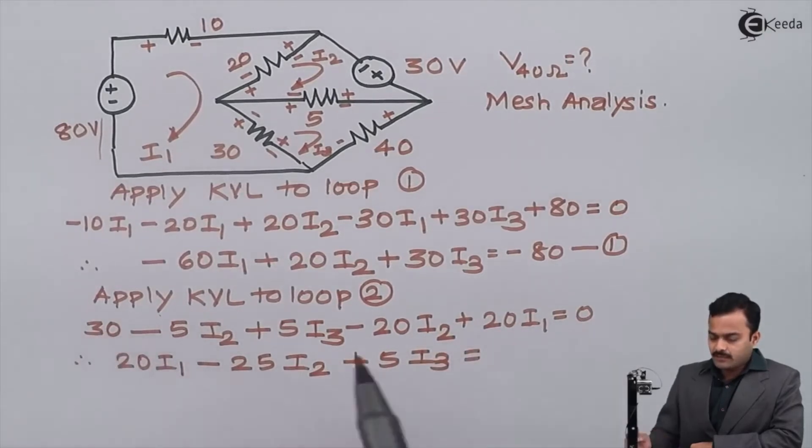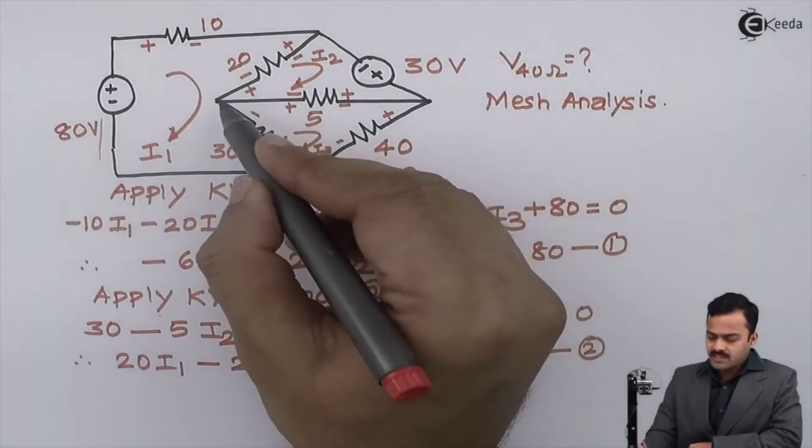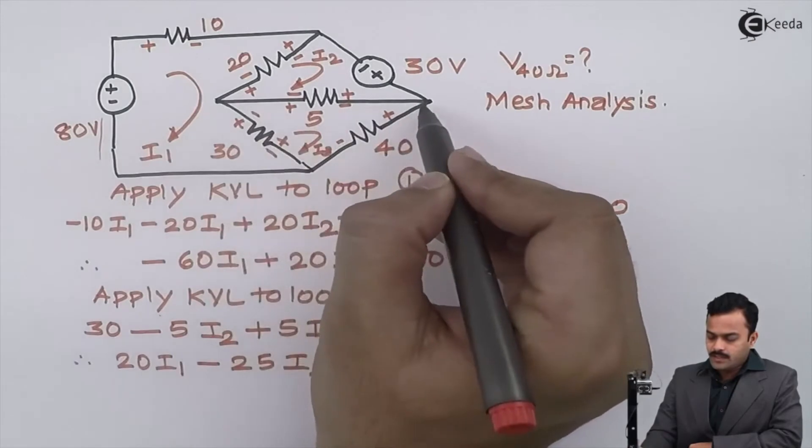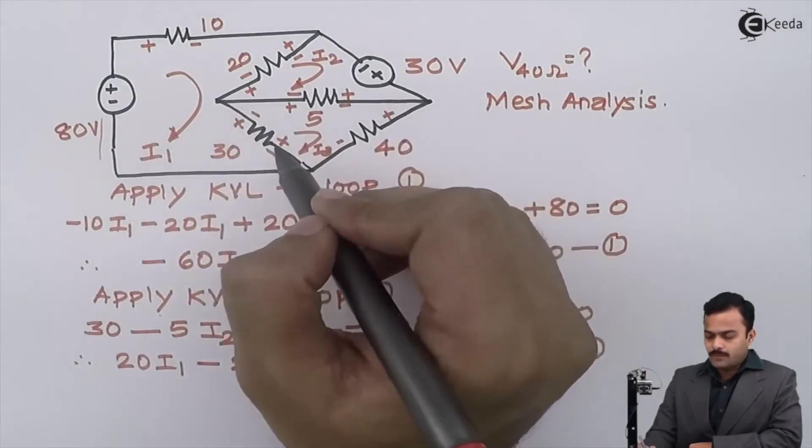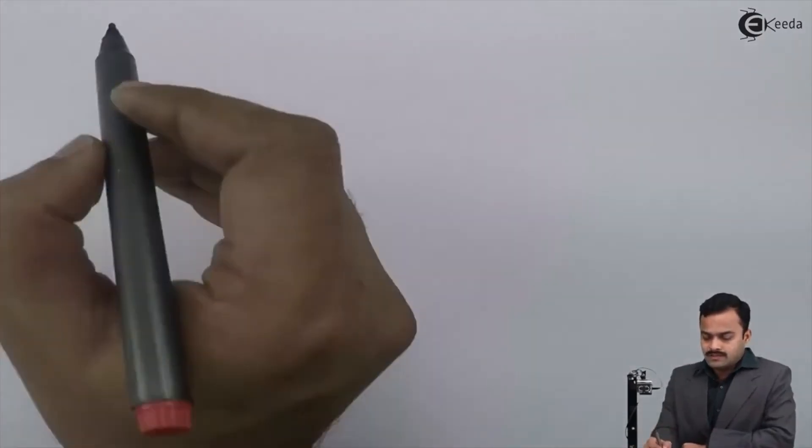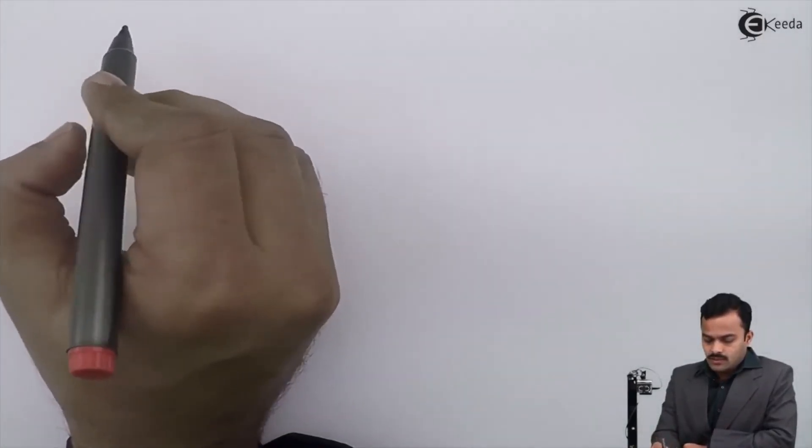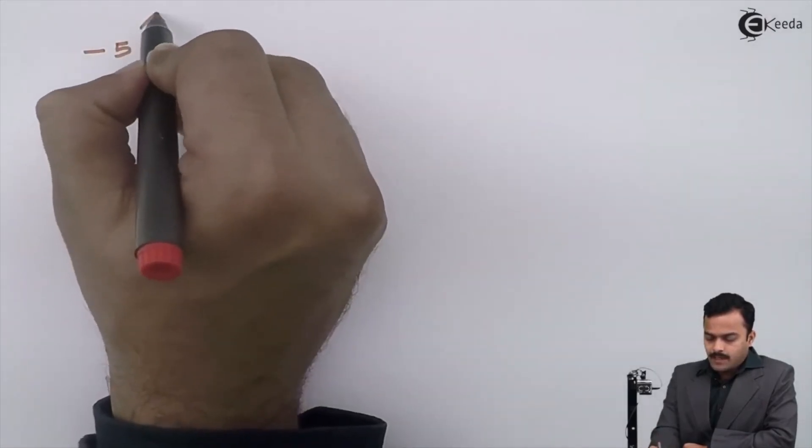Similarly, I can apply KVL to loop number three. I will start my discussion from this point, and tracing this path, I will have three voltage drops and two voltage rises. So, apply KVL to loop number three.